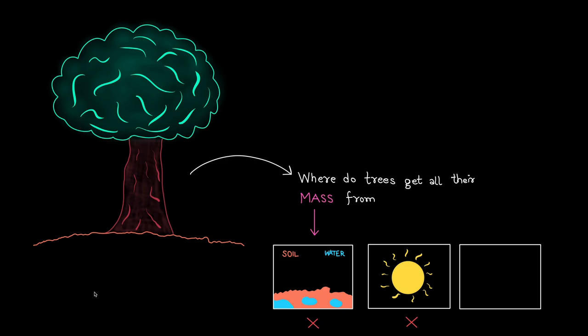So if it doesn't come from energy and if it doesn't come from the soil and the water, then you might ask, where does the mass of the tree come from? And the answer is, it comes from air, a specific type of air.